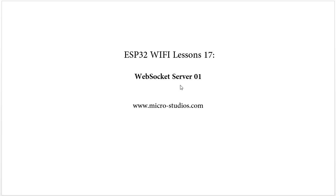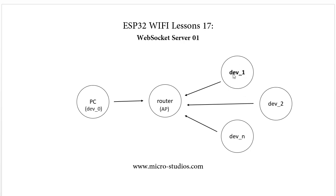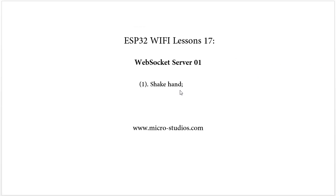For the WebSocket server, it can run on any device. We can use the PC browser or the WebSocket client to get data from the server. During data communication it has three parts: one is the handshake. For the first communication it needs the handshake to set up the connection. The second part is receive data, and the third part is send data. These are the three important parts for the WebSocket server.